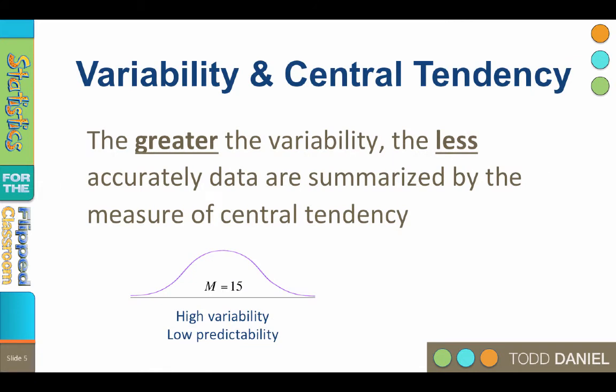And that is what we like in our data, too. The greater the variability, the less accurately a measure of central tendency summarizes the distribution. Predictions are less precise. Measurement error is larger. The mean is not as useful. But when the data are consistent with the mean, those data are predictable, stable, and representative. Low variability equals high predictability and high consistency.